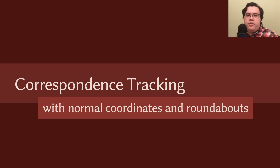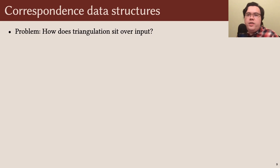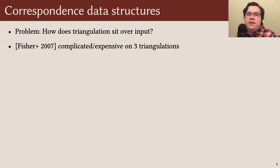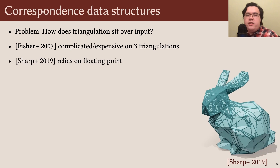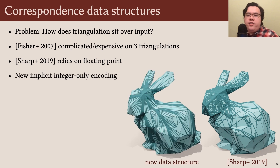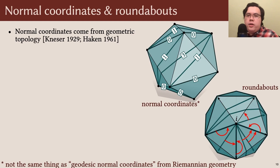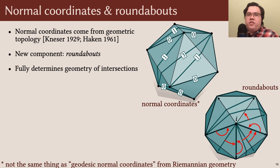Now I'll discuss our correspondence data structure. We need to track how our flipped triangulation sits over the input mesh, but unfortunately existing schemes don't suffice. The overlay mesh of Fisher and colleagues explicitly stores all intersections between triangulations, which gets very complicated and computationally expensive in our setting where we actually have to track three triangulations. On the other hand, the signpost data structure of Sharp and colleagues relies essentially on floating point, which can become inaccurate in the complicated hyperbolic triangulations that we encounter. We develop a new implicit integer encoding which always maintains the correct correspondence. Our data structure is comprised of normal coordinates, a classic tool from geometric topology, and a new concept which we call roundabouts. It fully determines the geometry of intersections between two triangulations and is easy to update after an edge flip.